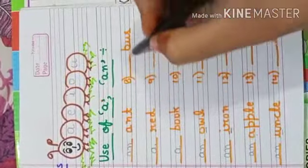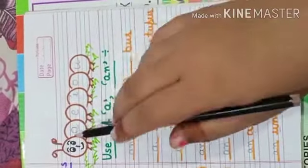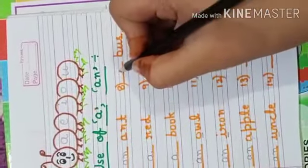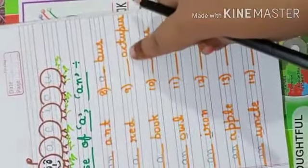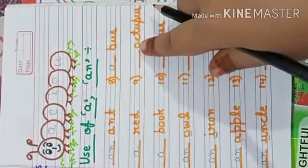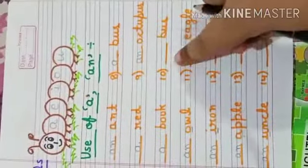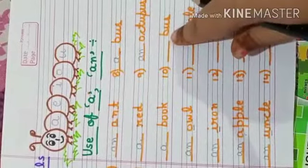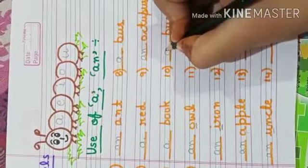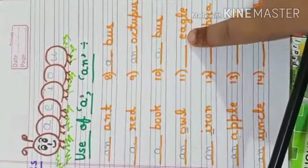Next, bus. B is a consonant, not a vowel. Vowels are A, E, I, O, U. B is a consonant, so we use A. Next, octopus. O is the first letter and O is a vowel, so we use AN.